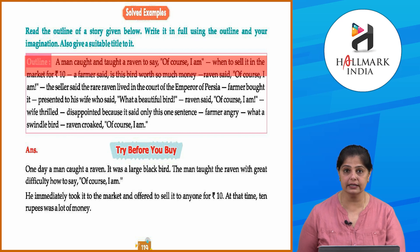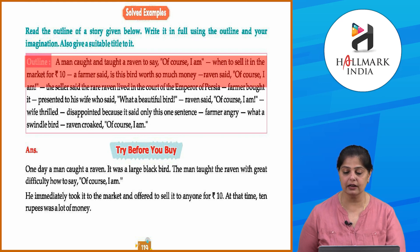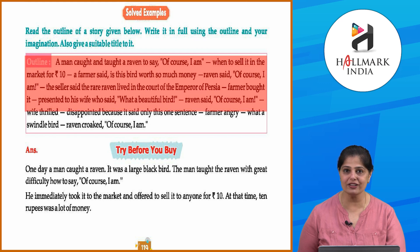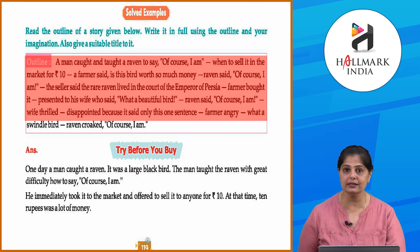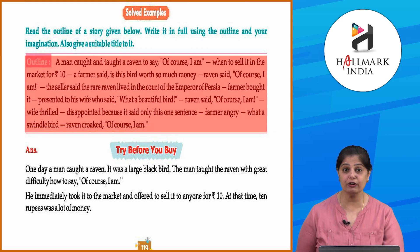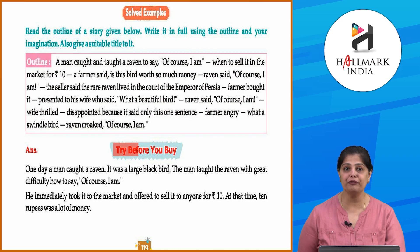A farmer said, 'Is this bird worth so much money?' The raven said, 'Of course I am.' The seller said the raven lived in the court of the emperor of Persia. The farmer bought it and presented it to his wife, who said, 'What a beautiful bird!' The raven said, 'Of course I am.' The wife was thrilled but later disappointed because it said only this one sentence. The farmer, angry, said, 'What a swindle!' The bird croaked, 'Of course I am.'